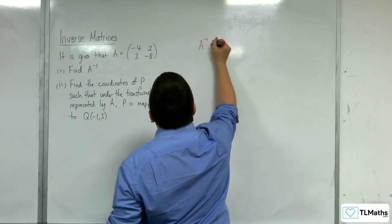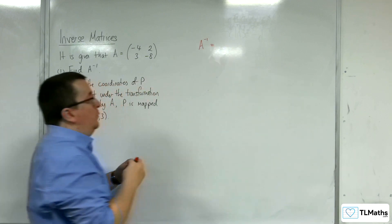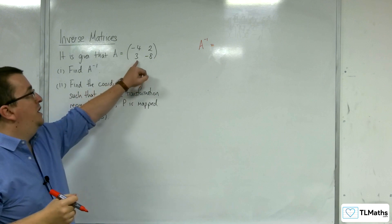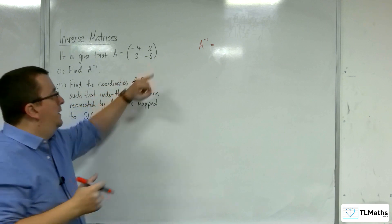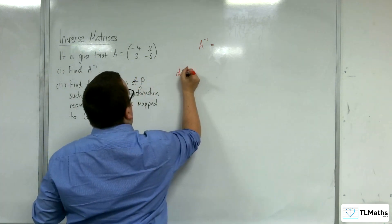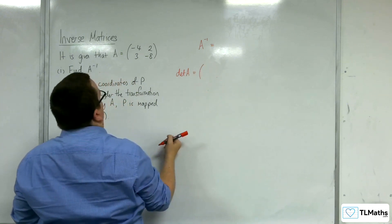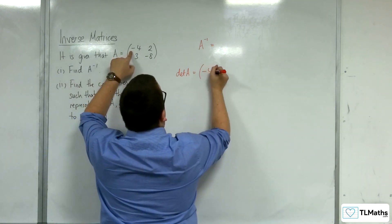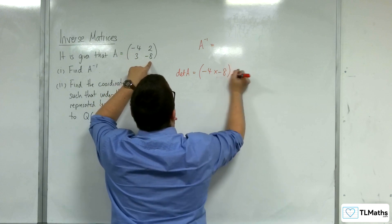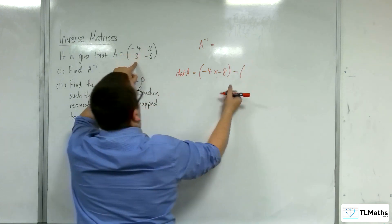So, A minus 1, the inverse matrix of A. We've got to find the determinant of this matrix first. The determinant of matrix A is going to be equal to minus 4 times minus 8, take away 2 times 3.